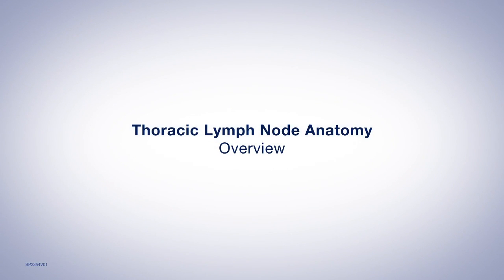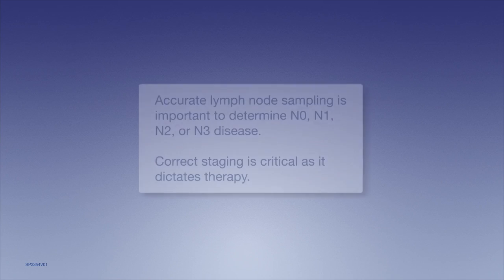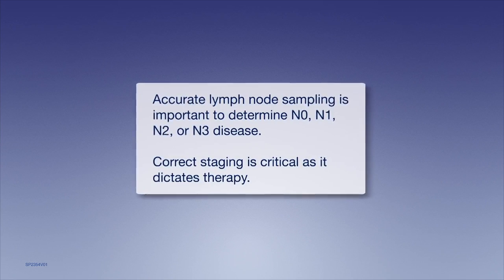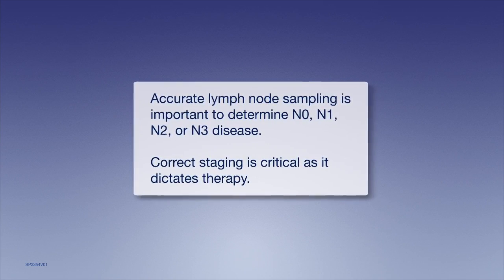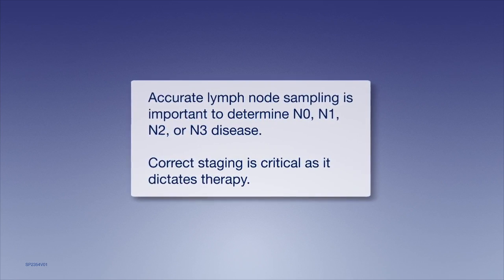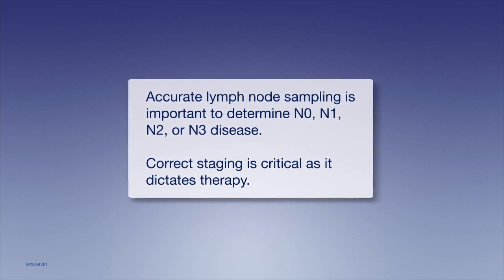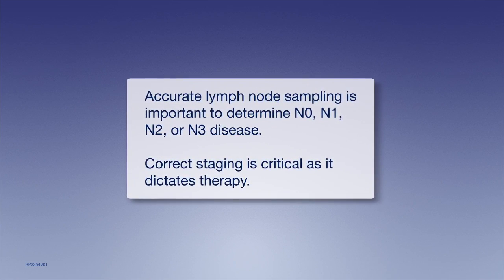Overview of Thoracic Lymph Node Anatomy. Accurate lymph node sampling is important to determine N0, N1, N2, or N3 disease. Correct staging is critical as it dictates therapy.